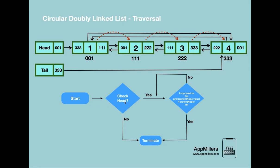The algorithm for traversal looks like this: first, we check if the head value is null — if it is, we return because there is no node to traverse. Otherwise, we loop from the head node, print the current value at each step, and compare if the current node equals the tail. If so, we terminate; otherwise we continue until we reach the last node.